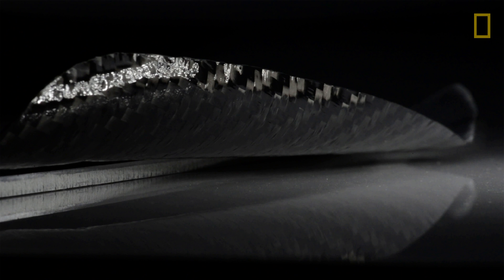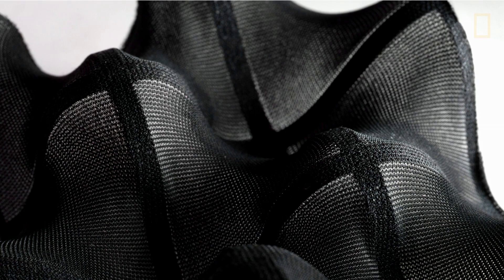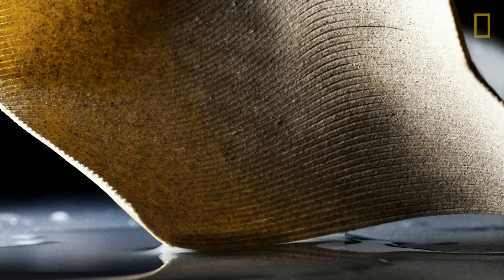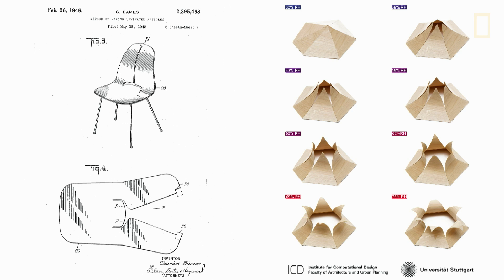We've released three materials so far. The first one is programmable carbon fiber, textiles, and wood. With wood, there's a long history of using wood as an active building material — from Japanese joinery that would use moisture to make more precise tight joints to contemporary examples.